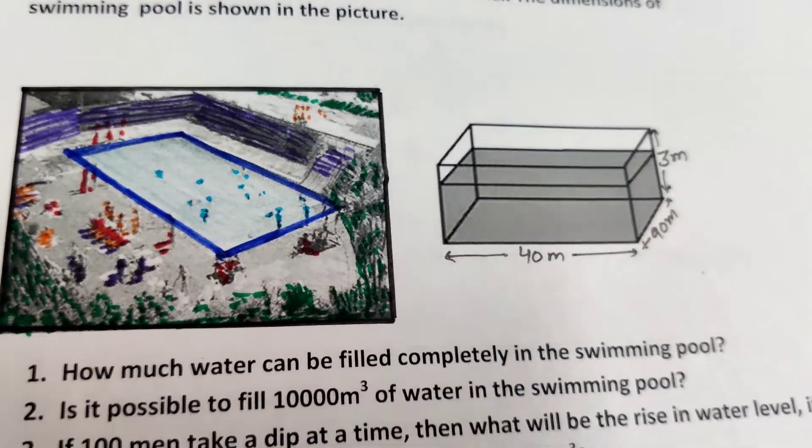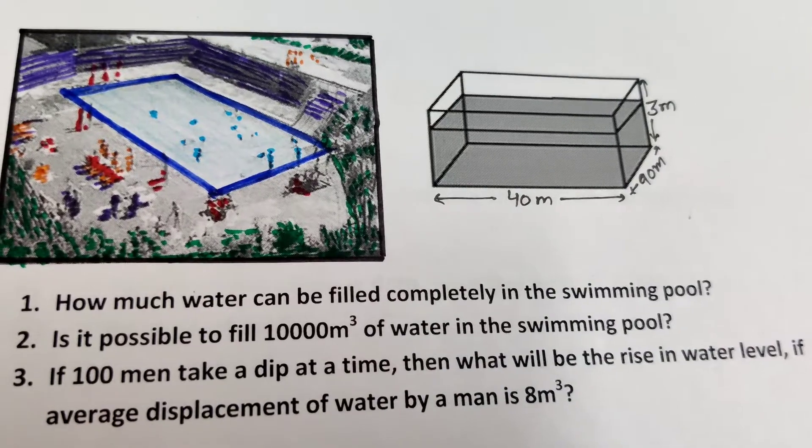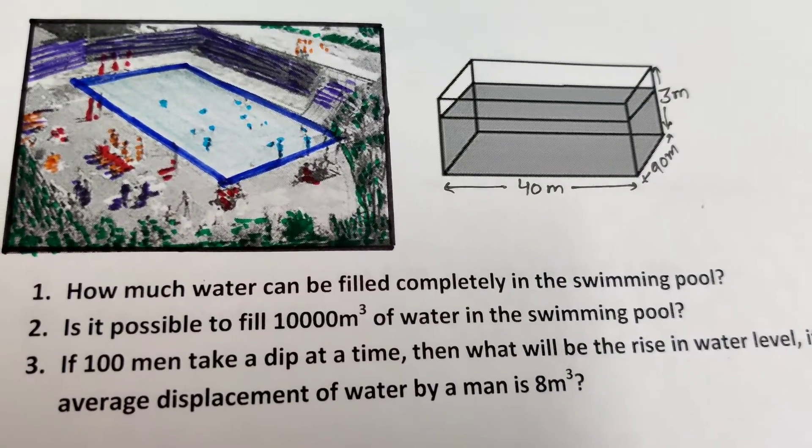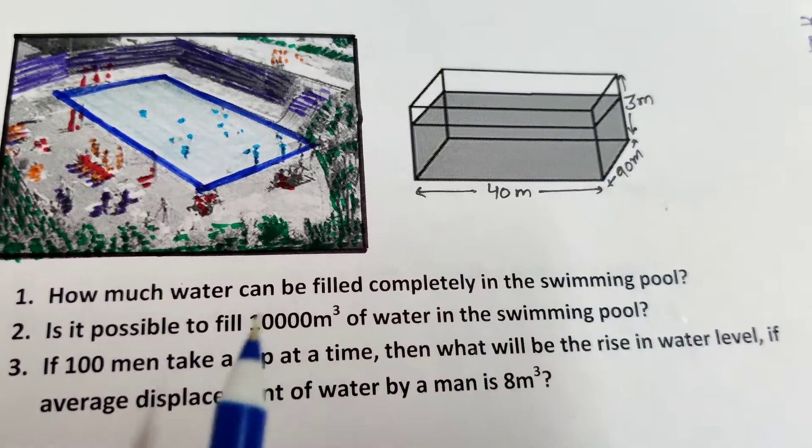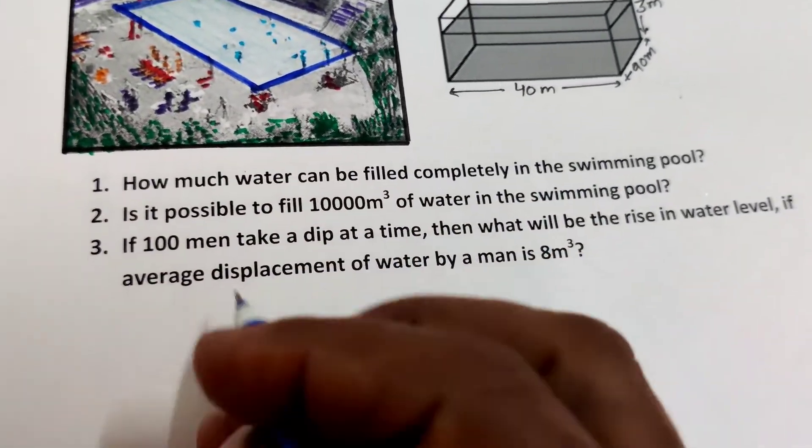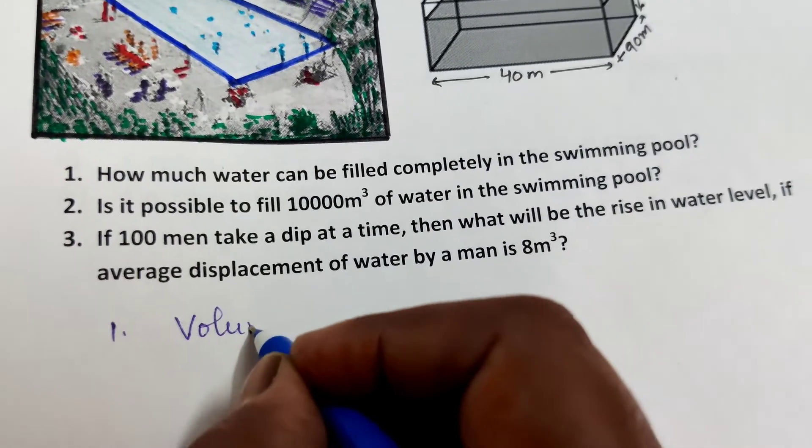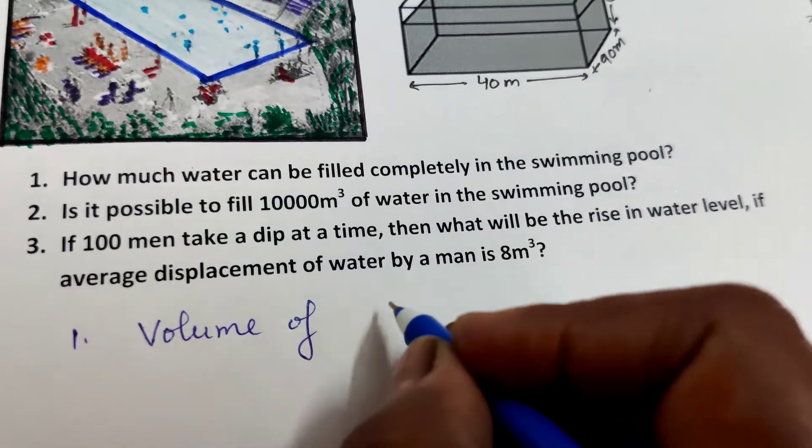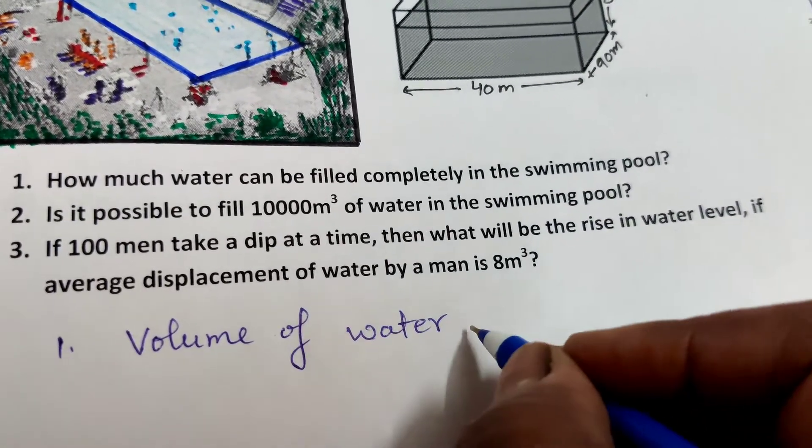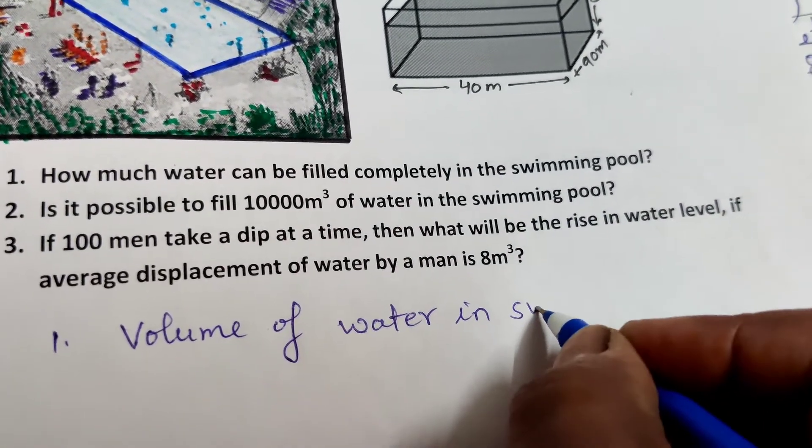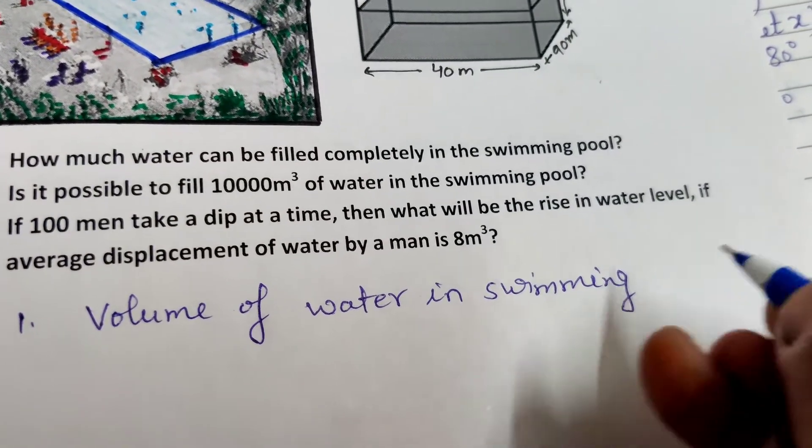Question number one: How much water can be filled completely in the swimming pool? This means we need to find the volume of water in the tank. Answer number one: Volume of water in swimming pool equals length into breadth into height. Since the swimming pool is cuboidal, it means 90 into 40 into 3.